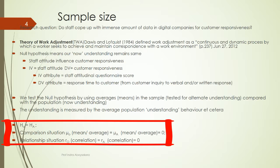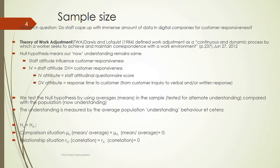We look at the relationship between staff attitude and customer responsiveness, and whether that relationship is statistically significant. In our null hypothesis, we state that staff attitude influences customer responsiveness. If it doesn't influence, then there is a new understanding, because when the null hypothesis does not equal the alternative hypothesis and there is a statistical difference, a new understanding has emerged.